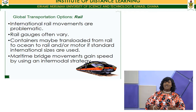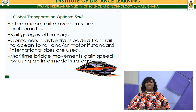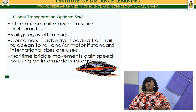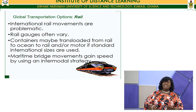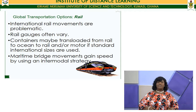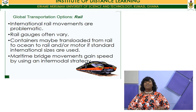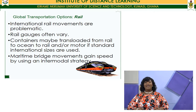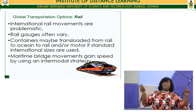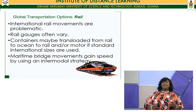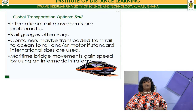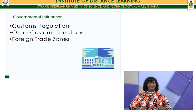International rail movements are more problematic because rail gauges often vary. Containers may be transloaded from rail to ocean to rail and all-motor if standard international sizes are used. Maritime bridge movements gain speed by using an intermodal strategy. Rail also provides an opportunity to ship relatively higher bulk within the global environment, though when moving from country to country, ocean is predominantly used.